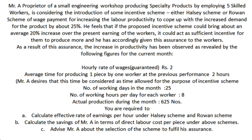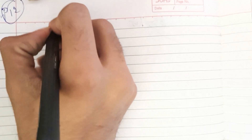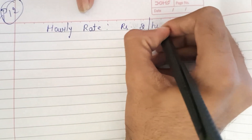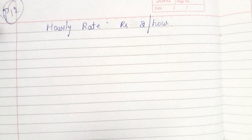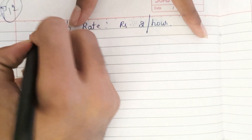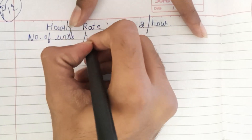Now some data has been given. The hourly rate of wages (guaranteed wages) is ₹2. The average time for producing one piece is two hours. The number of working days in a month is 25 days and each day they work 8 hours. Total units produced are 625 units.